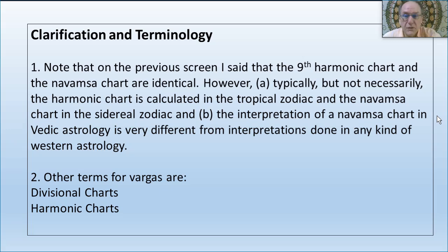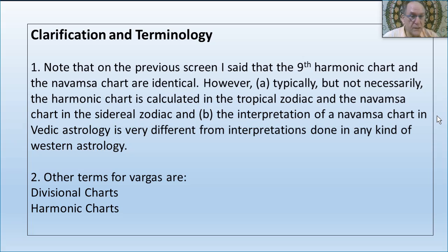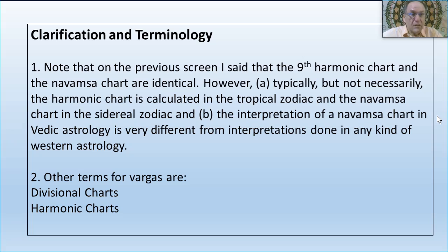There are other terms for Vargas — they're sometimes called divisional charts. The Navamsa chart is sometimes called D9, so you'll hear Vedic astrologers say 'I'm looking at the D9 chart' — another term for Navamsa. Or D7, another term for the Saptamsa chart. The Hora chart happens to be D2 and so on — you're dividing the chart into that many pieces. They're also sometimes called harmonic charts, which can get confusing.